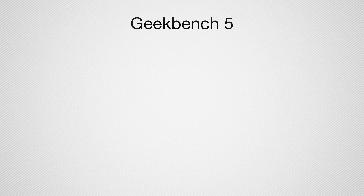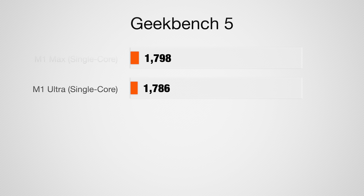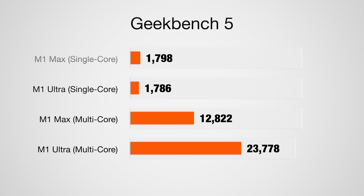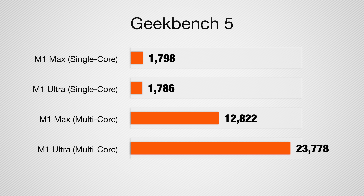In Geekbench 5 for the single-core score, we expected these to be pretty much the same, and that's what we got — a 1798 for the M1 Max and a 1786 on the Ultra, just within the margin of error. For the Geekbench 5 multi-core, we saw that big difference between the 10 and 20-core CPUs: 12,822 on the M1 Max and 23,778 on the M1 Ultra.